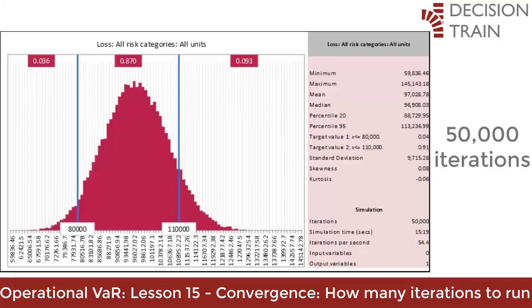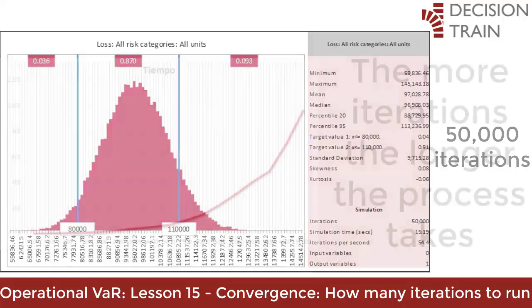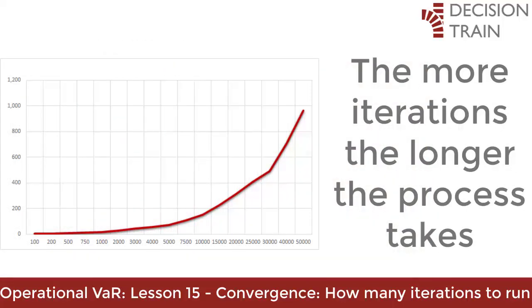The more iterations you add to your process, the more stable your curve, and especially your stats, will be. Some statistics like the mean and median converge quickly. Others, like extreme percentiles, tend to require more iterations to stabilize. However, the more iterations, the longer the process takes.